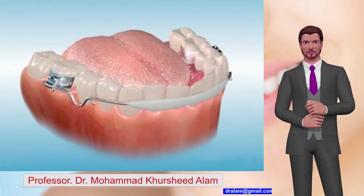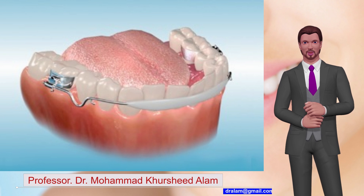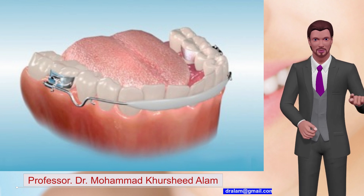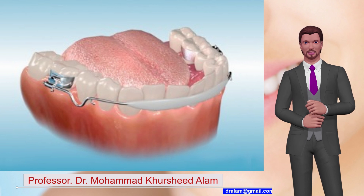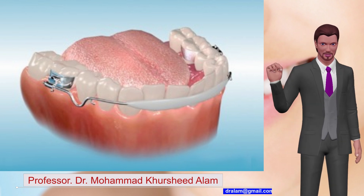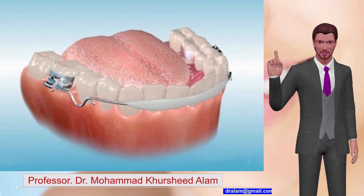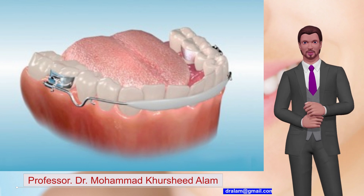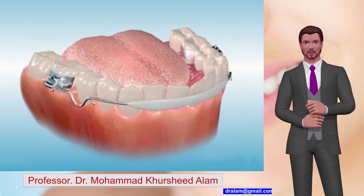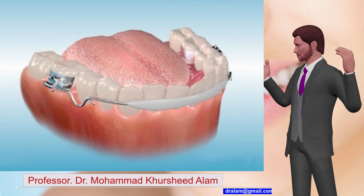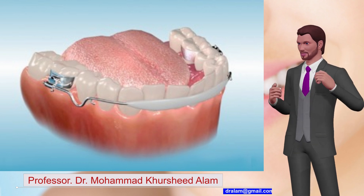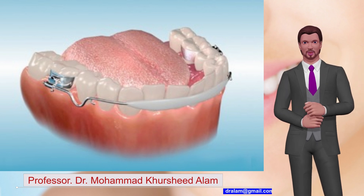Number 11: Lip Bumper. U-shaped combined removable-fixed orthodontic appliance. Used in mixed dentition, in both maxilla and mandible, to keep the lips away from the teeth. Indications include: lip sucking patients, hyperactive mentalis activity, to augment anchorage, and distalization of first molars.